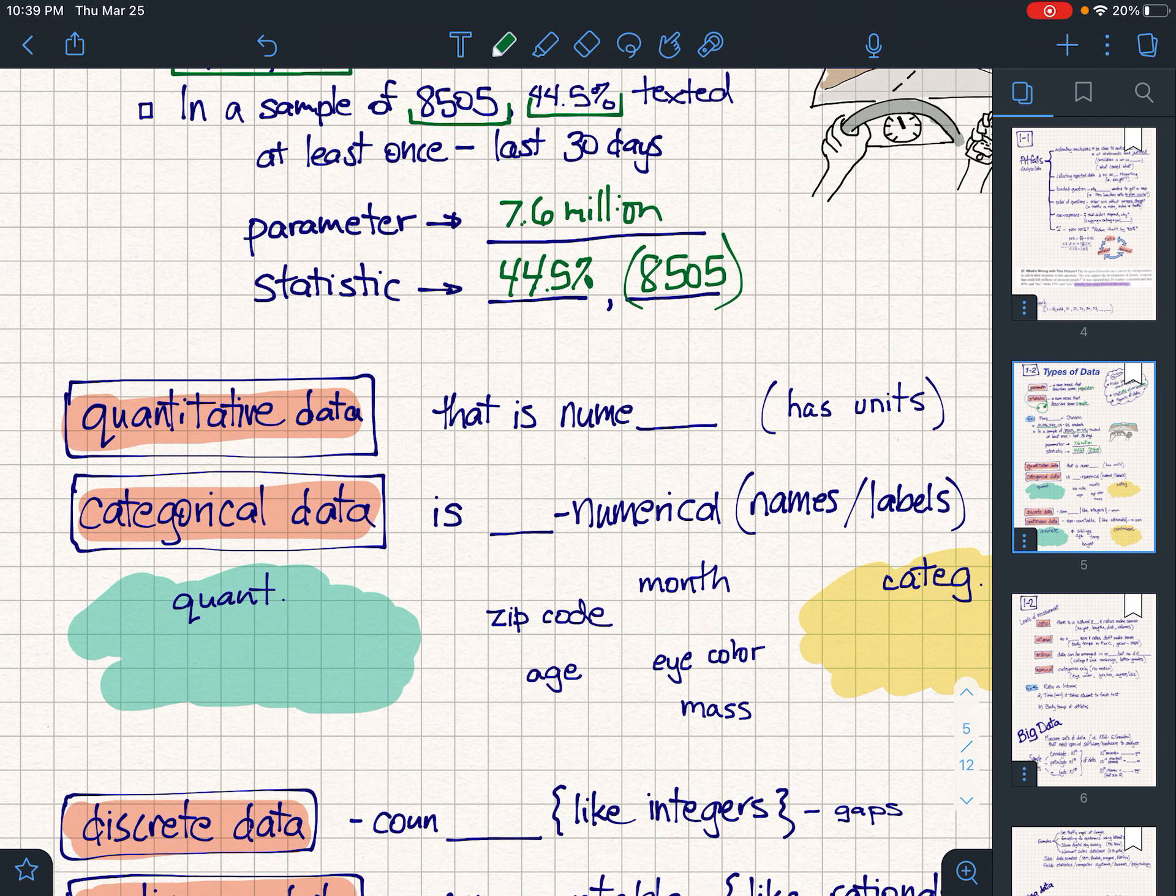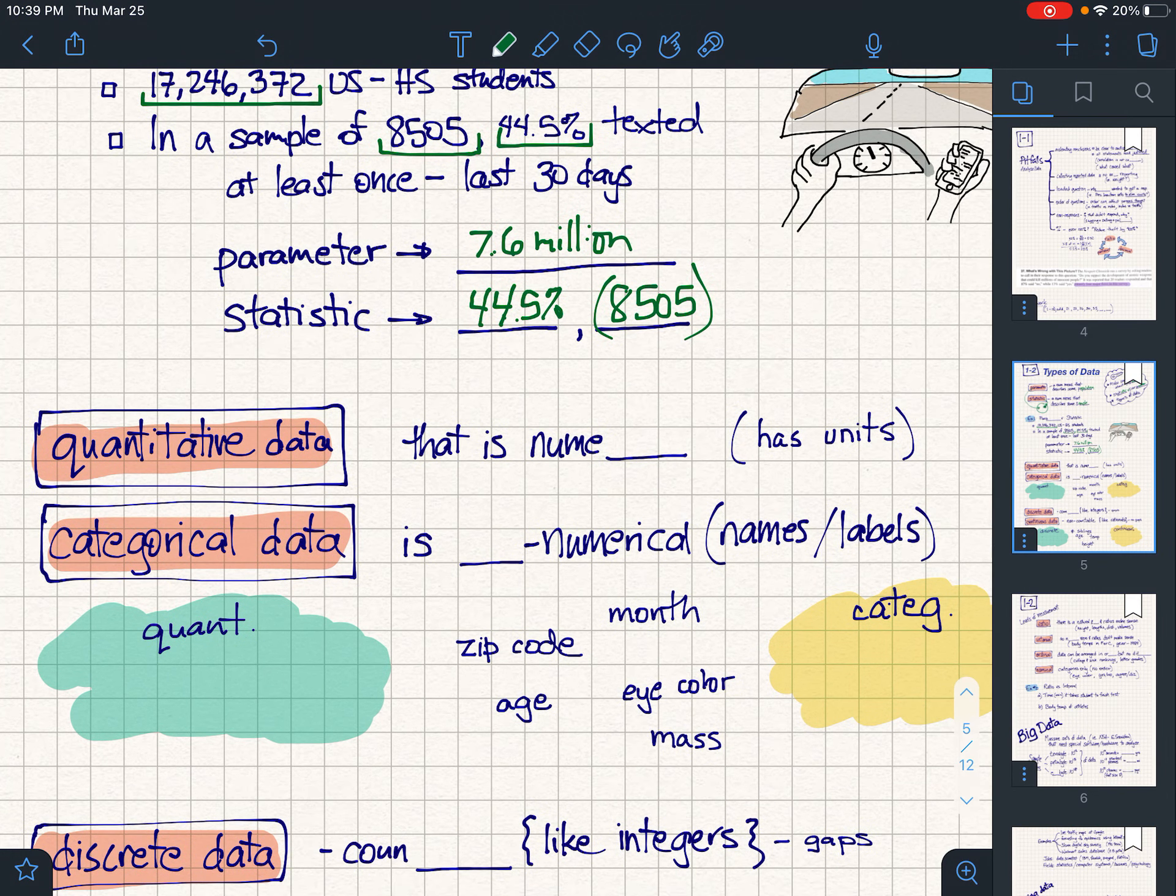Second type of data: quantitative versus categorical. Pretty easy, I think. Quantitative is a number, it's got units, you can count it, whereas categorical data is names and labels. We refer to them as non-numerical. Now be careful, non-numerical doesn't mean that there's no numbers.